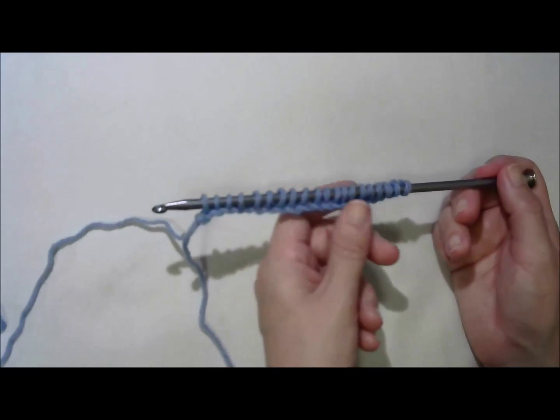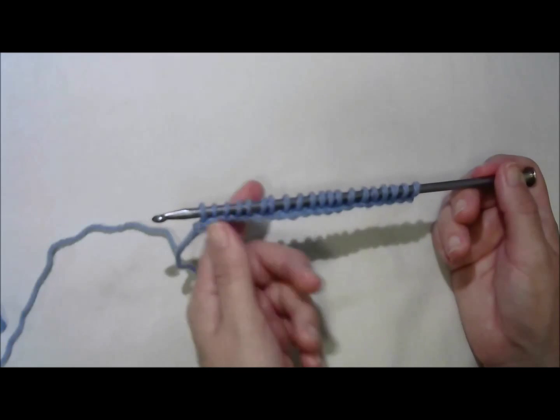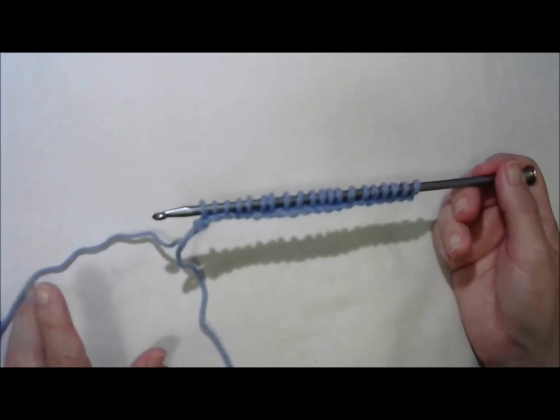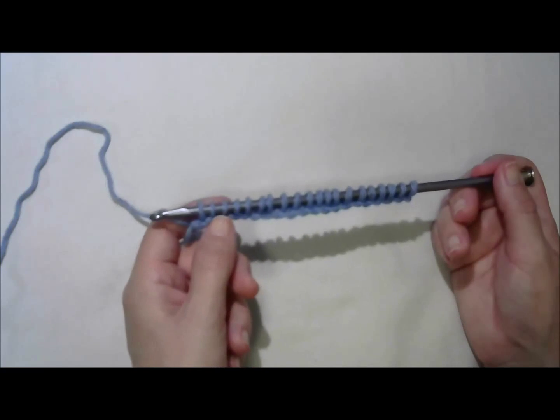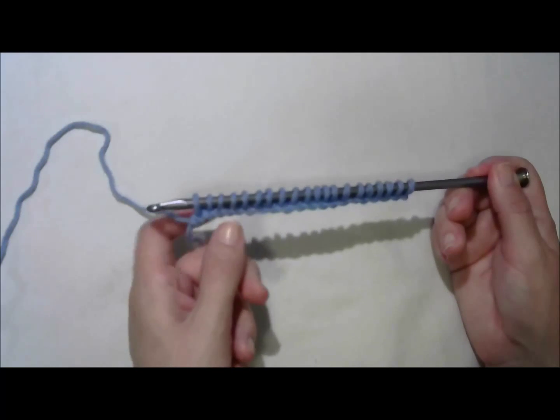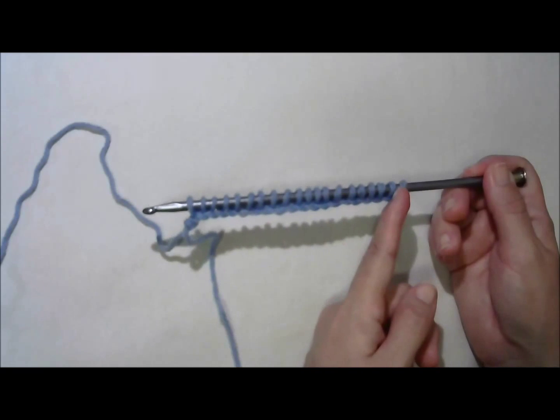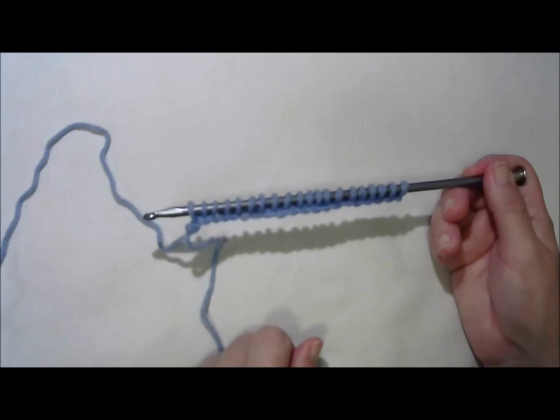Don't they look pretty? Notice how mine are very loose. In Tunisian, loose stitching is best. If you tighten up, you'll just get more curl, and it'll be a lot harder for you to work through these loops on the return pass, which we're going to do next. Remember, loose is key.